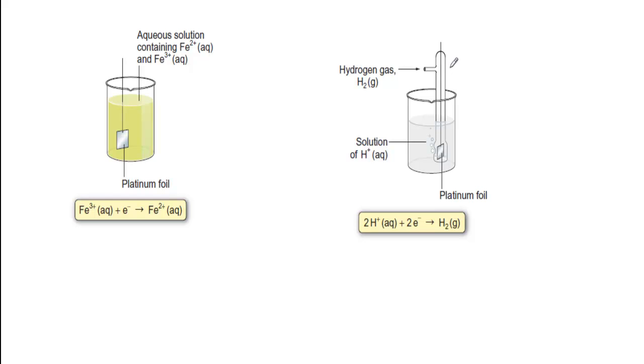So what you have is a piece of platinum foil which is in the solution of Fe3+ and Fe2+, and that acts as the collector for the electrons which can then flow down a wire.